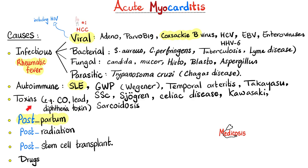Diphtheria toxin causes myocarditis and peripheral neuropathy. Postpartum, post-radiation, and post-cardiac transplant can also lead to myocarditis, as well as some medications.